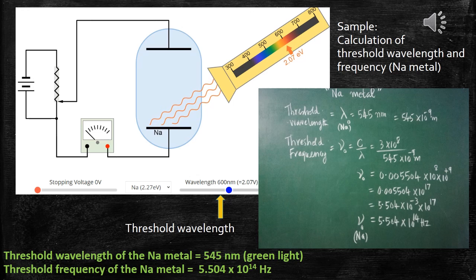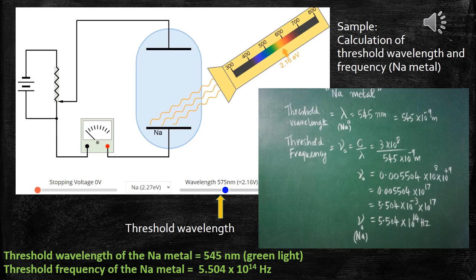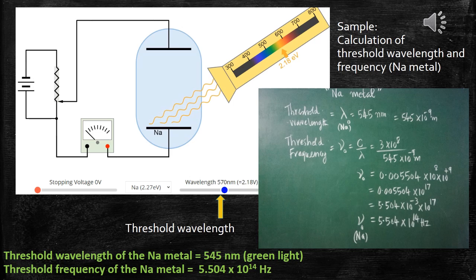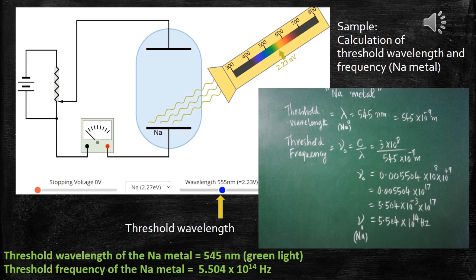At the bottom, the wavelength is mentioned as 800 nanometers initially. The marking is slowly moving from the higher wavelength region to the lower wavelength region. When the marking is slowly moving, the incident radiation wavelength also changes. Till it reaches 545 nanometers, no electron will be ejected out.